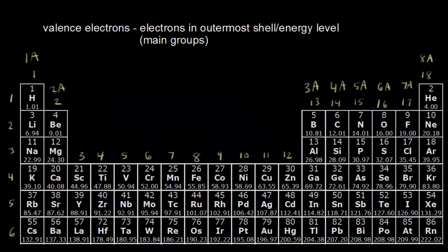Now that we've classified our elements into groups on the periodic table, let's see how to determine the number of valence electrons. For this video, we're only talking about the valence electrons for elements in the main groups. When we talk about the main groups, we're using the one through eight system for classifying groups.